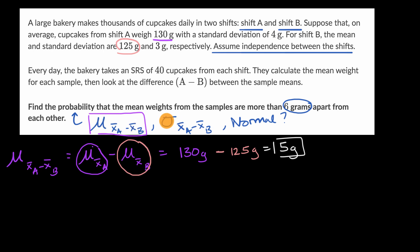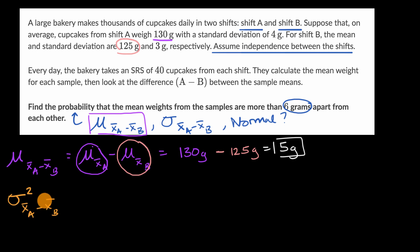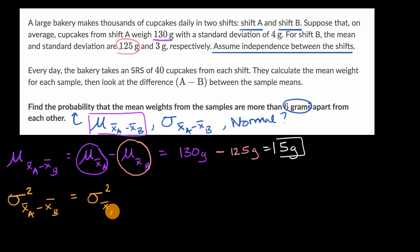Now, what about the standard deviation? Let's think about variances first, because the math is a little easier with variances, and then we can derive the standard deviation from that. The variance of the sampling distribution for the difference in sample means, assuming the two samples are independent and you're sampling with replacement, is going to be the sum of the variances of the sampling distributions for each of the sample means.